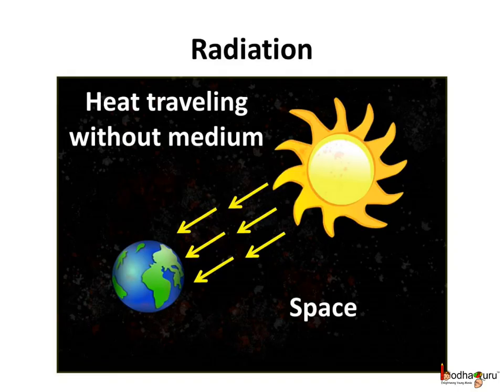Now you may be wondering how do we get heat from the sun? As we know, there is no solid, liquid, or gas between the sun and the earth — it is just vast empty space, or vacuum. Still, we feel the heat of the sun. So heat may transfer without any medium. When heat comes out of a body and travels through the vacuum, that form of heat transfer is called radiation.